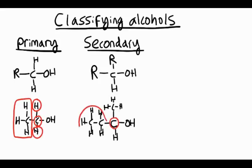Notice our longest chain has four carbons, and we number them to make the alcohol have the lowest number possible — it's on that second carbon. So that would actually be butane-2-ol.